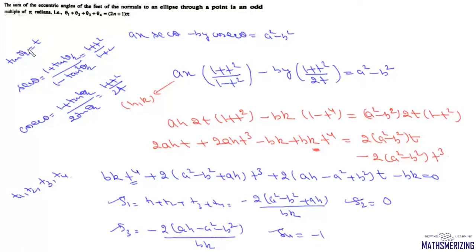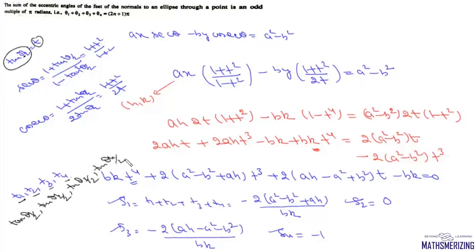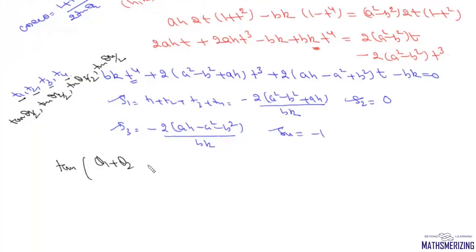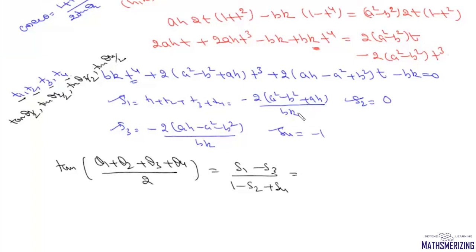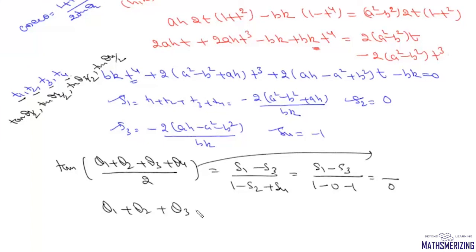Since we set t = tan(θ/2), the roots t₁, t₂, t₃, t₄ represent tan(θ₁/2), tan(θ₂/2), tan(θ₃/2), tan(θ₄/2). Using the tangent addition formula: tan((θ₁ + θ₂ + θ₃ + θ₄)/2) = (S₁ - S₃) / (1 - S₂ + S₄). Substituting: denominator = 1 - 0 + (-1) = 0. When the denominator is 0, the angle (θ₁ + θ₂ + θ₃ + θ₄)/2 must be an odd multiple of π/2.